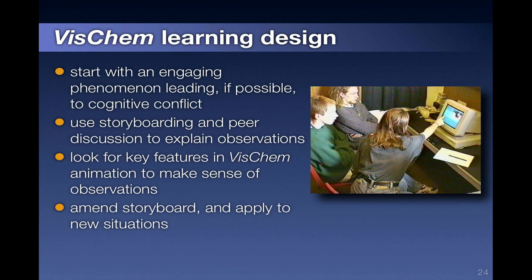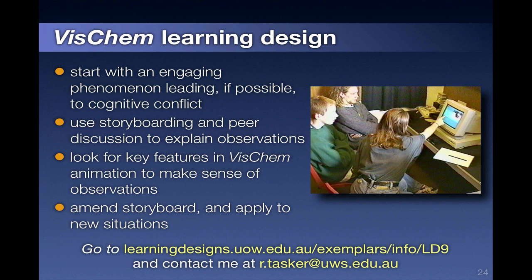For example, the rusting of iron, which has some new twists but also occurs at the surface of a metal. Well, that's the VisChem learning design. Go to the website shown for more detail or contact me by email.